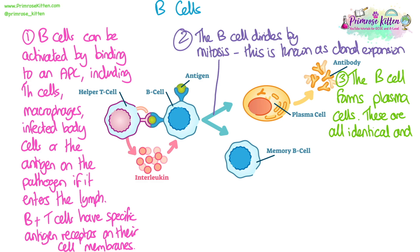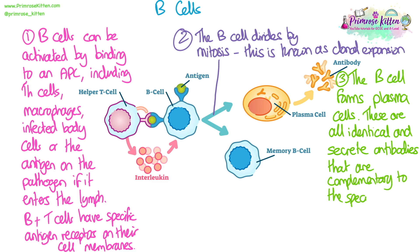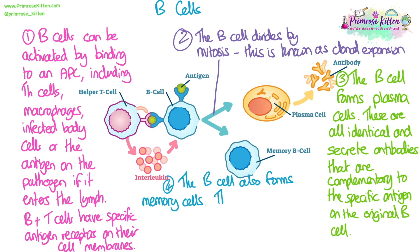When the B cell divides it forms plasma cells — all identical because they're produced by mitosis — which secrete antibodies with a complementary shape to the specific antigen on the original B cell. B cell division also produces memory cells, which travel in the blood and can be stored in the bone marrow. If this antigen is encountered again, memory cells are re-activated and divide rapidly to produce more plasma cells and complementary antibodies.